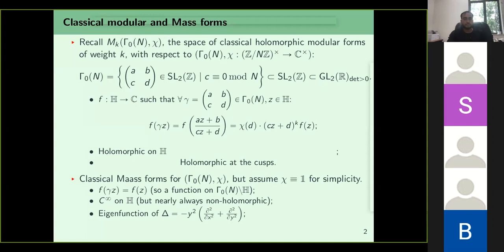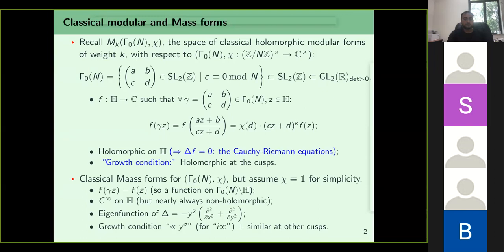A third property is that you require f to be an eigenfunction of what is known as the hyperbolic Laplacian. Those familiar with the upper half plane as a Riemannian manifold know that this is the correct Laplacian to consider. There is also a growth condition which we will ignore. Since f is holomorphic, the Laplacian applied to f is 0 by the Cauchy-Riemann equations, and holomorphicity at the cusps can be thought of as a growth condition.